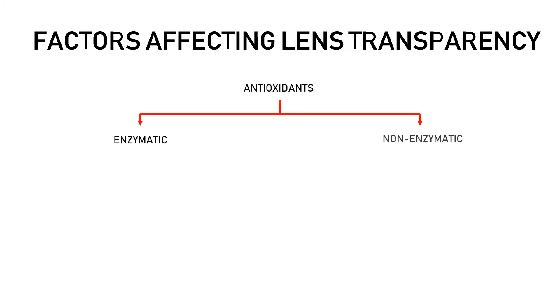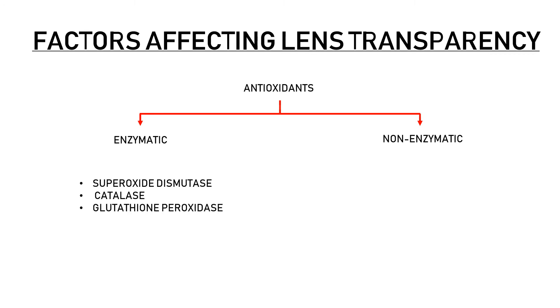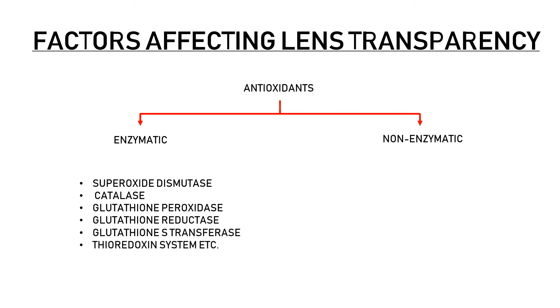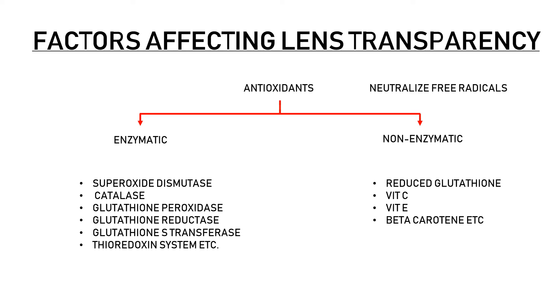Lens transparency is also maintained by the presence of antioxidants. There are enzymatic and non-enzymatic antioxidants present in the lens. The major enzymatic antioxidants are superoxide dismutase, catalase, glutathione peroxidase, glutathione reductase, glutathione S-transferase, and the thioredoxin system. Non-enzymatic antioxidants include reduced glutathione, vitamin C, vitamin E, and beta-carotene. These antioxidants neutralize free radicals generated during oxidative stress, and a decline in their activity has been observed during cataract formation.